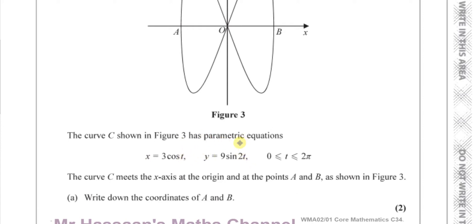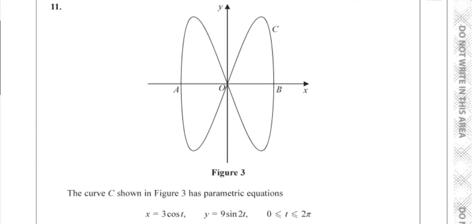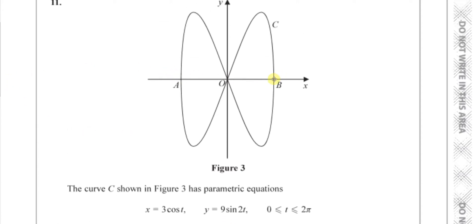A parametric equation is defined with three parameters: x, y, and the third parameter t — that's why it's called parametric, there are three variables. In this question, the curve C meets the x-axis at the origin and at points A and B as shown in figure 3. We need to write down the coordinates of A and B.